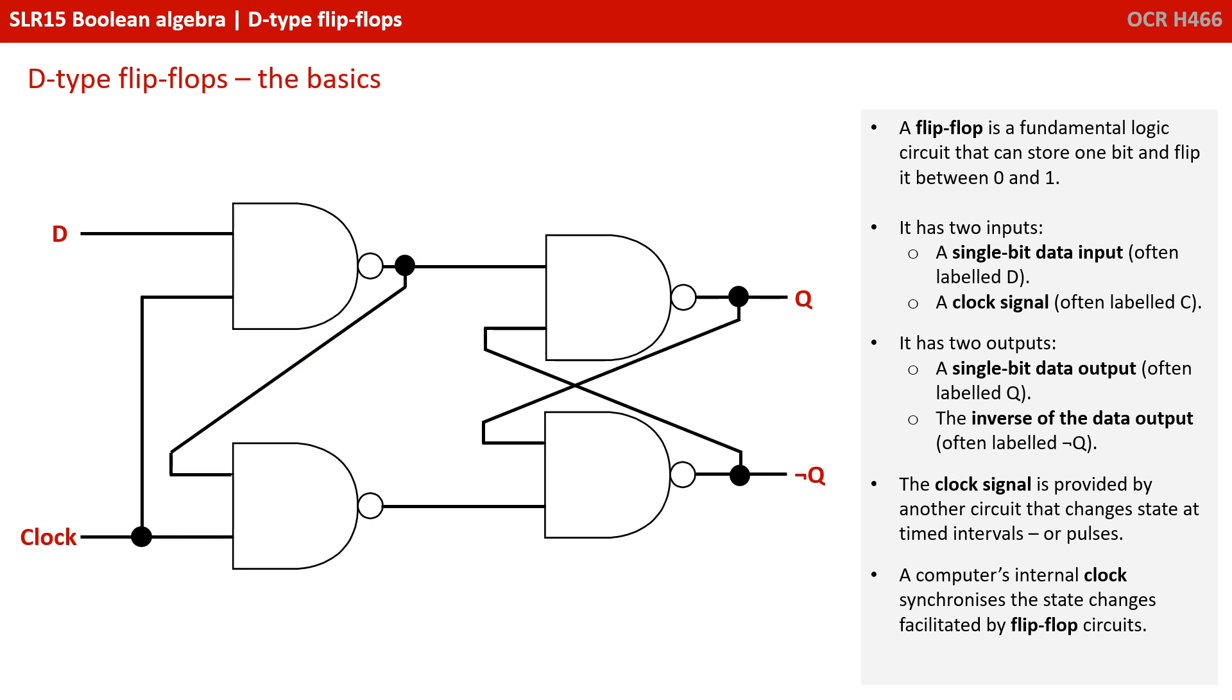A flip-flop is a fundamental logic circuit that can store one bit and flip it between a 0 and 1. It has two inputs: a single bit data input often called D, and a clock signal often labeled C. It has two outputs: a single bit data output often called Q, and the inverse of the data output often labeled not Q.